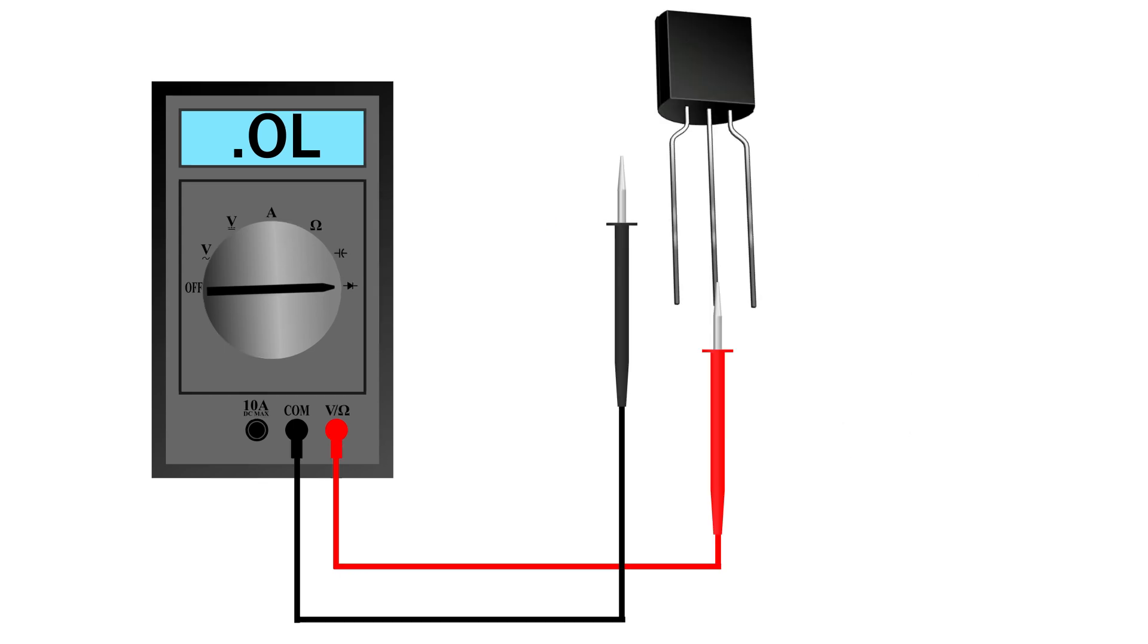Connect multimeter positive probe to middle pin. Touch negative probe to left pin. You will see a voltage drop, usually 0.6 to 0.7 voltage. Touch negative probe to right pin. Again you will see a voltage drop. If both these readings show it's an NPN transistor, and middle pin is base.